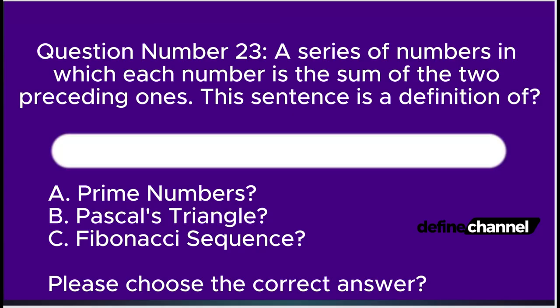Question number twenty-three. A series of numbers in which each number is the sum of the two preceding ones. This sentence is a definition of: A. Prime numbers, B. Pascal's triangle, C. Fibonacci sequence. Please choose the correct answer.